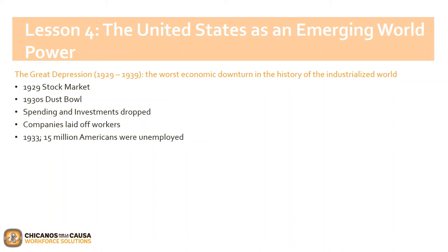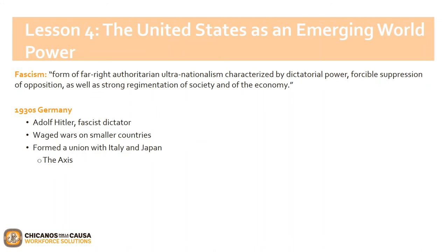People were no longer spending or investing in stocks. Companies were laying off their workers. The low point of the Great Depression came in 1933 when 15 million Americans were unemployed. The effects were seen worldwide. In European nations, the Depression led to extremist political movements such as fascism — a form of far-right, authoritarian ultra-nationalism characterized by dictatorial power, forcible suppression of opposition, and strong regimentation of society and economy.